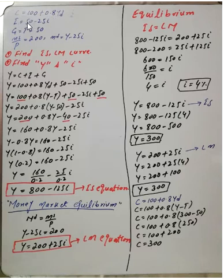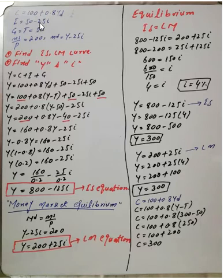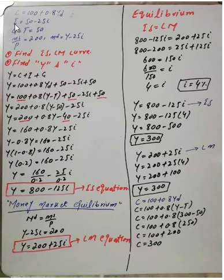Investment equals 50 minus 25r. Here 50 is autonomous investment — what we must invest regardless of the interest rate. The term 25r represents induced investment, which is negatively related with the interest rate: when the interest rate increases, investment decreases. The interest rate is the independent variable and investment is the dependent variable for this model.